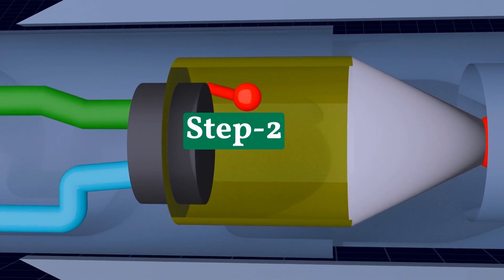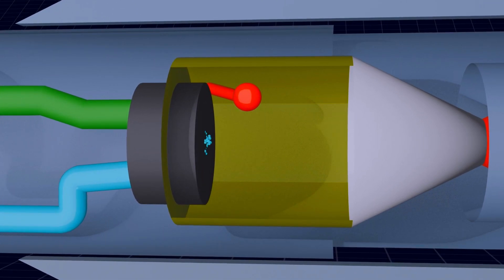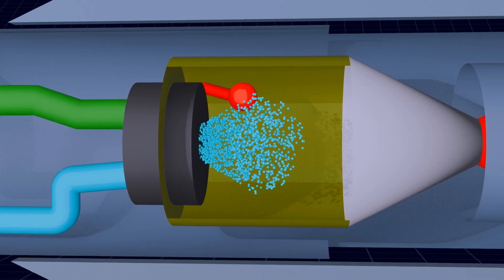Step 2: The injector mixes the fuel and oxidizer and sprays them into the chamber.